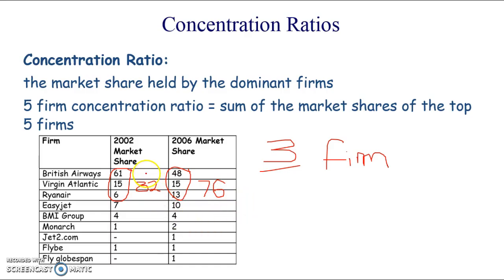So what we can see is actually the market is becoming less concentrated in the top three firms. And it's mainly because British Airways has lost quite a big market share. Ryanair has actually gained a big market share. But we're seeing smaller players enter the market.